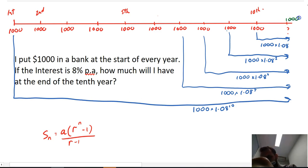I'm going to add in an extra $1,000 there. So it's like at the end of the tenth year, I put in an extra $1,000, because if I do that, I can treat the $1,000 as my first term. So now in my formula,